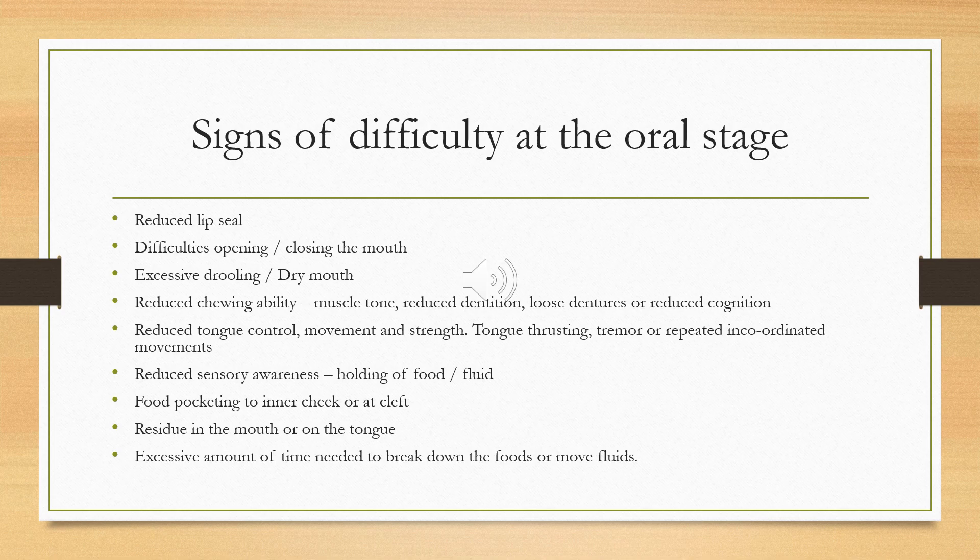Incoordinated movements can occur because of polypharmacy, conditions like Parkinson's, or as a pattern from childhood. Some people might have reduced sensory awareness — they might need heightened sensory aspects to food and might not be able to detect taste or temperature, which can lead to people burning their tongue or mouth. You might see some people holding food or fluid in their mouth — quite common within dementia — not aware it's still there. Food can pocket to the inner cheek, between the teeth and cheek on both sides, and even at the front. With a cleft palate, bread can get stuck there.